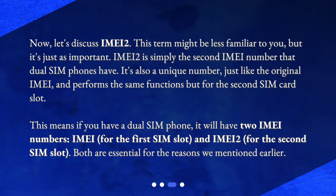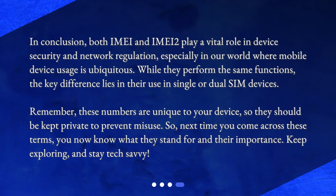This means if you have a dual SIM phone, it will have two IMEI numbers — IMEI for the first SIM slot, and IMEI 2 for the second SIM slot. Both are essential for the reasons we mentioned earlier. In conclusion, both IMEI and IMEI 2 play a vital role in device security and network regulation, especially in our world where mobile device usage is ubiquitous.